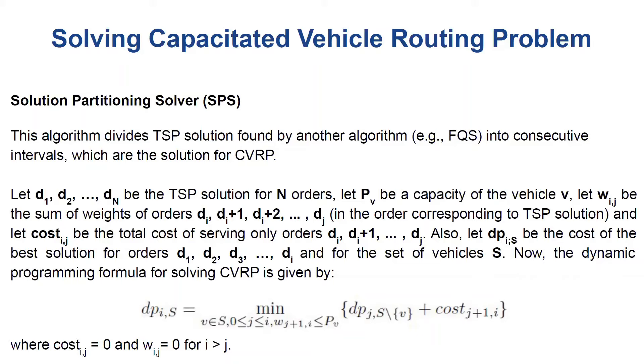Now we can do that using dynamic programming by considering the cost of the best solutions for orders up to a certain index and for a given set of vehicles. And this is a classical part, so the quantum part is used only to solve the traveling salesman problem.